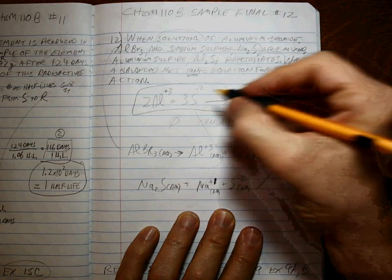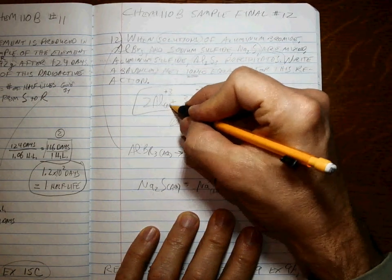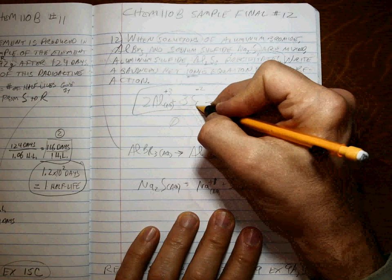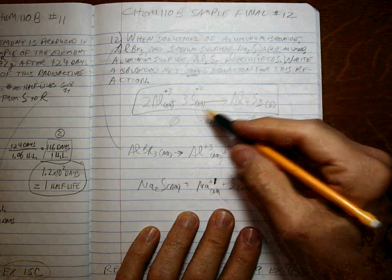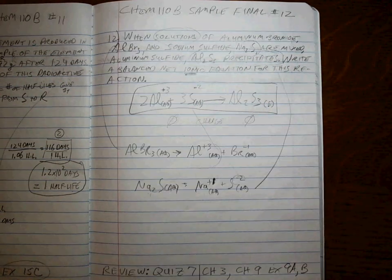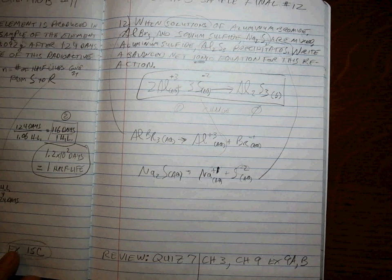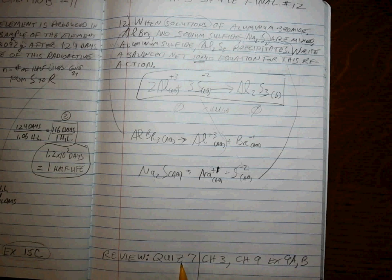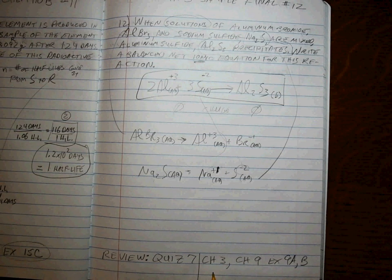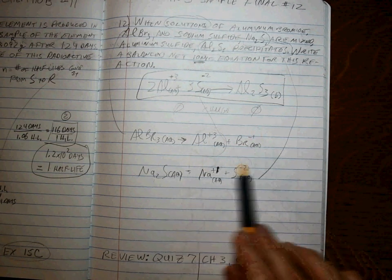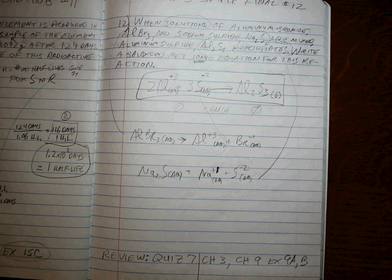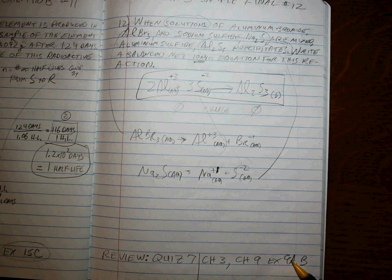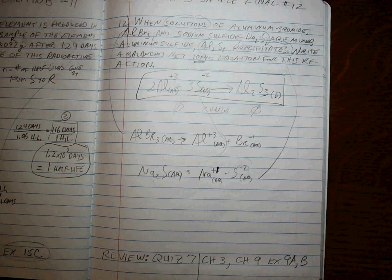If you have to write the state of matter, these are aqueous solutions. They combine to make that solid precipitate. That is it for the net ionic equation. If you have to review, go to quiz 7 or work up on chapter 3 for ions, and that's chapter 9, exercises A and B. Practice up. Good luck.